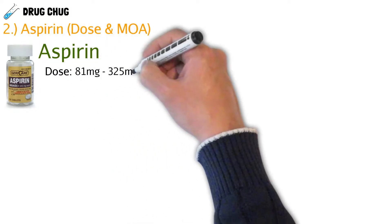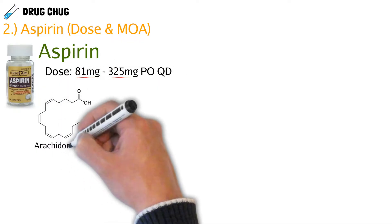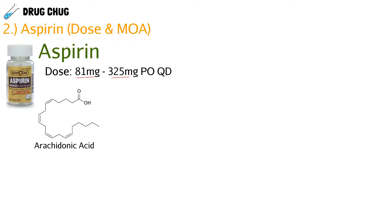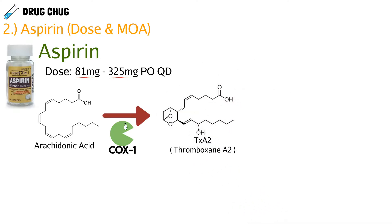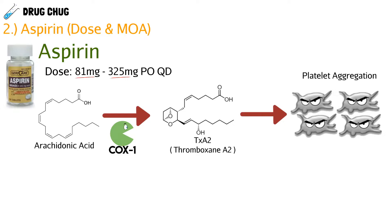Aspirin has two doses: baby aspirin at 81 milligrams and the normal dose at 325 milligrams. For platelets, we focus on the baby aspirin. It all starts with arachidonic acid, produced through the prostaglandin pathway. An enzyme called COX-1 converts arachidonic acid to thromboxane A2, which causes platelet aggregation. When aspirin is taken, it blocks COX-1, which stops thromboxane A2, which stops platelet aggregation.